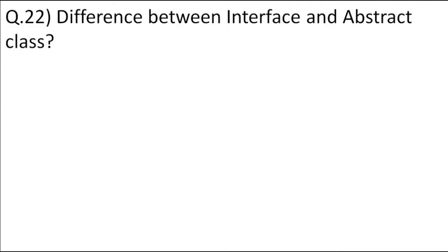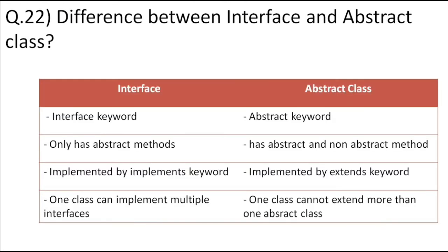What is the difference between interface and abstract class in Java? An interface has only abstract methods, but an abstract class can have both abstract and non-abstract methods. Interface is written with the interface keyword; abstract class uses the abstract keyword. A class implements an interface but extends an abstract class. You can implement multiple interfaces, but you cannot extend multiple abstract classes since multiple inheritance is not supported in Java.